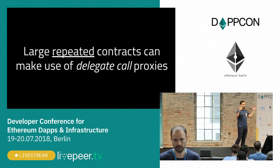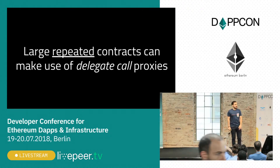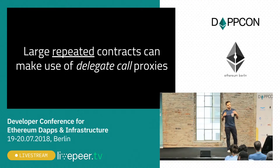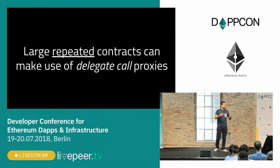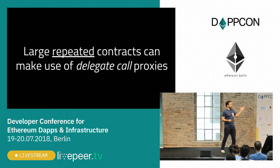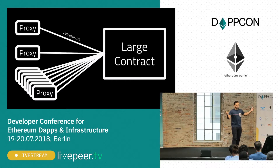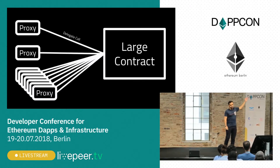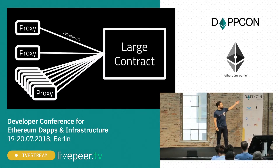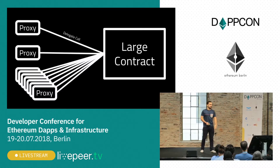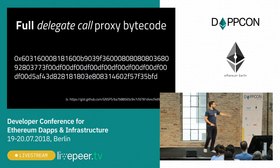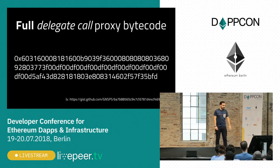Now, if we think in a more architectural kind of way, if you're deploying a lot of the same large contracts over and over again, then you probably can make use of a delegate call proxy. A proxy would do a delegate call, fetch the code from the large contract, and you would save a lot on deployment costs. The full delegate call proxy bytecode would be something like this.